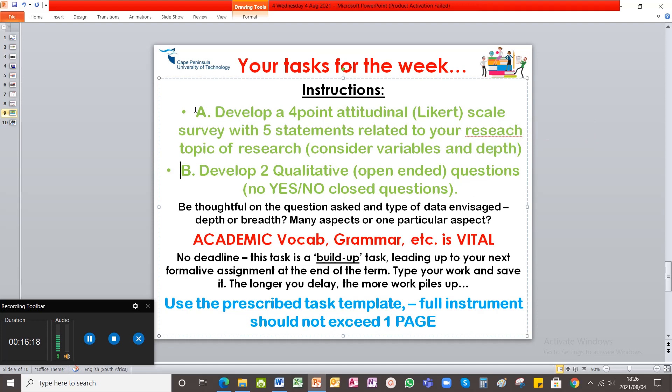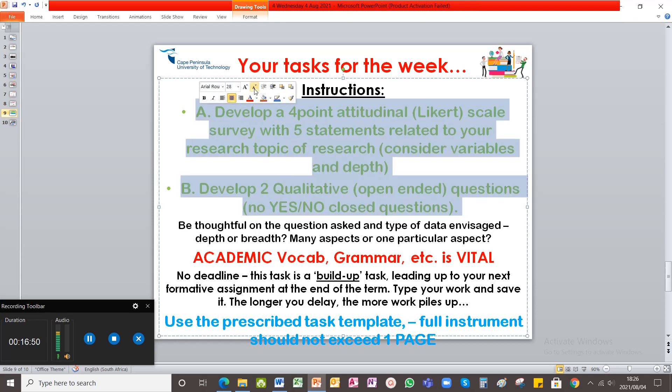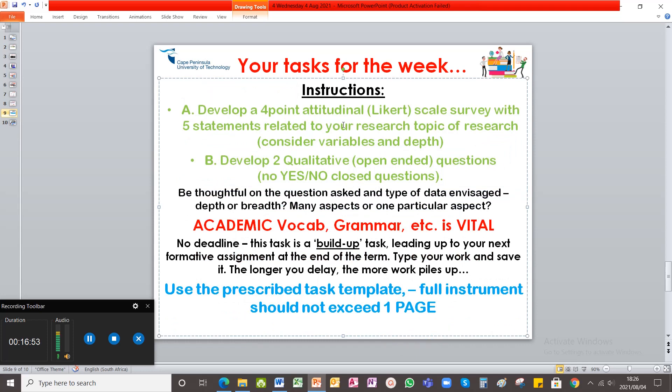Then B, this is the quantitative section. Now the qualitative section, you have to develop two open-ended questions. They will not be yes, no. So no closed questions. If I see closed questions, immediately a zero for this. You have to develop two open-ended or qualitative questions also related to your research topic.